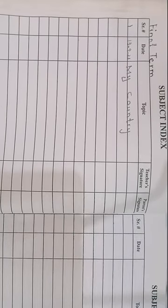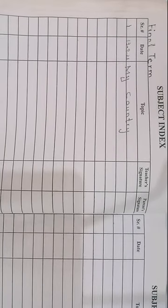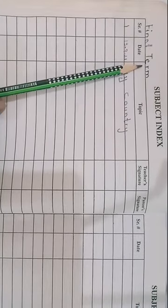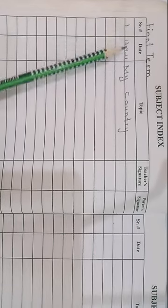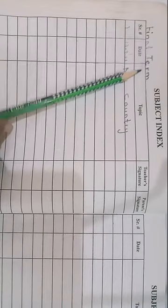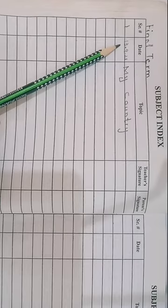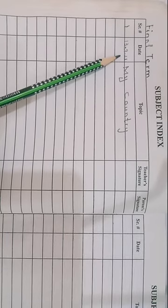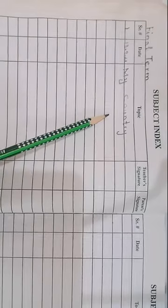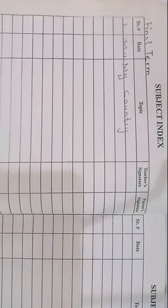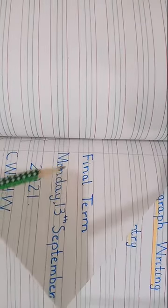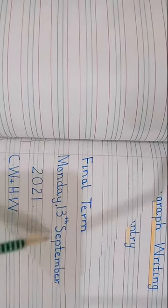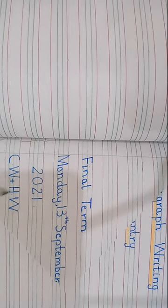Students, you will have to write the paragraph 'My Country' in your notebook of English grammar. This is final term number one. You will have to start on the next page. After writing 'Final Term,' write number one. Today's date is 13/9/21 and the topic is 'My Country.' This is your index. Prepare the page like this: Final Term, Monday, 13 September 2021, full stop, CW plus HW.